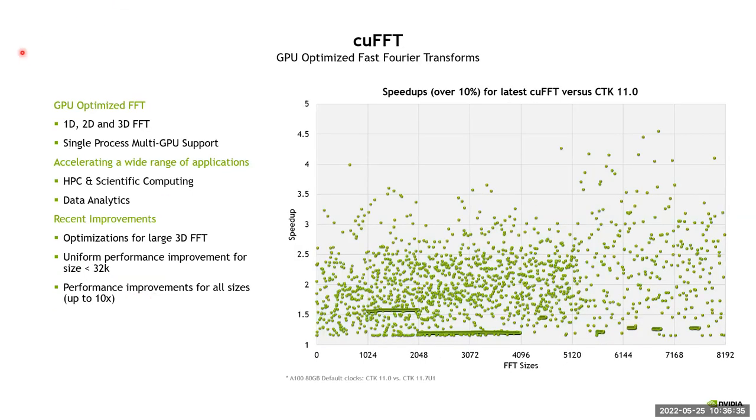cuFFT, I think is probably the other major library that's used very widely in scientific computing. And it does provide support for 1D, 2D and 3D. And again, across multiple GPUs. This kind of eyesore chart on the right is showing a variety of performance improvements that we've seen over a variety of different FFT sizes. So we've put out some recently some optimizations for very large FFTs and also some performance improvements on the opposite end for some of the smaller ones as well. So across all sizes, we've seen as much as a 10x performance improvement in the recent releases.